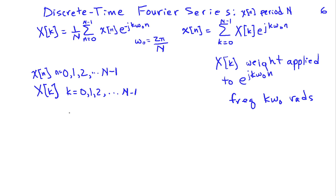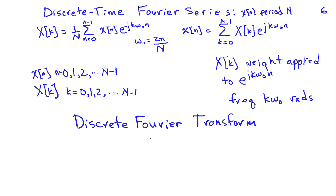An important variation of the discrete-time Fourier series is the discrete Fourier transform, or DFT. From an equation standpoint, the only change is moving the 1/N factor to the other side. The DFT is a critical computational tool: none of the other Fourier representations can actually be computed on a digital computer, because they either require an infinite number of samples or are continuous in one variable. The DFT is discrete in both variables and uses a finite number of samples, making it the only one we actually compute.